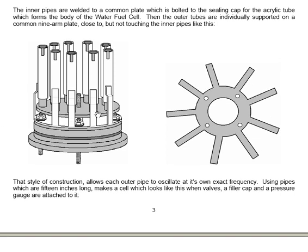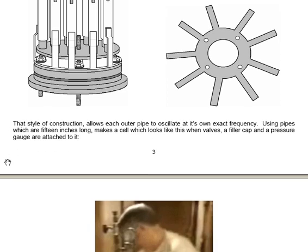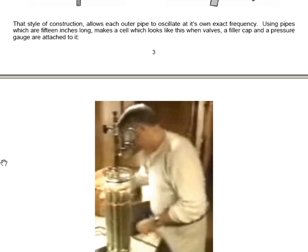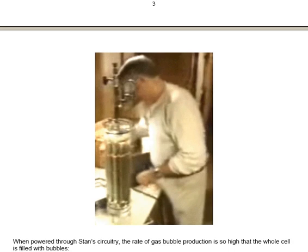Then, outer tubes are individually supported on a common nine-arm plate, close to, but not touching, the inner pipes. And, generally speaking, this is the way that the system looks. That style of construction allows each outer pipe cell to oscillate at its own exact frequency.